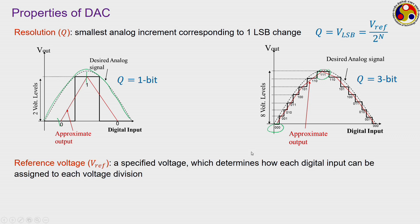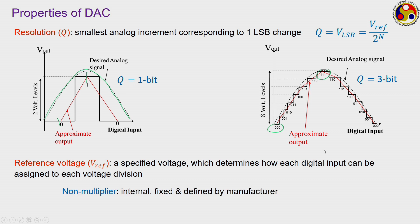The reference voltage determines the magnitude of the resolution — how much voltage is assigned to each digital level. Higher reference voltage means higher resolution. Reference voltage can be of two types: non-multiplier type, which is internal to the device and set by the manufacturer (the user cannot change it), and multiplier type, where the user can set the reference voltage using an external voltage source, making it variable.